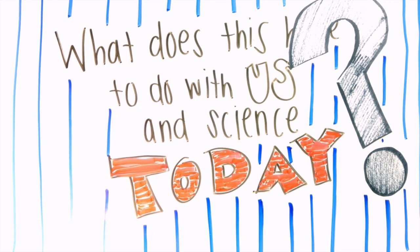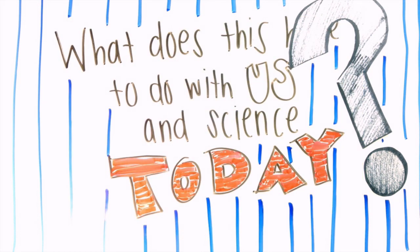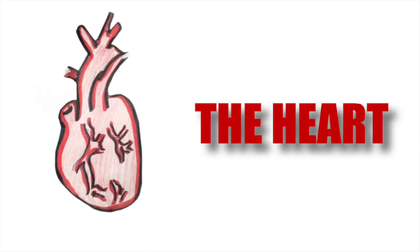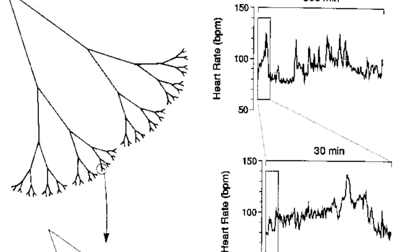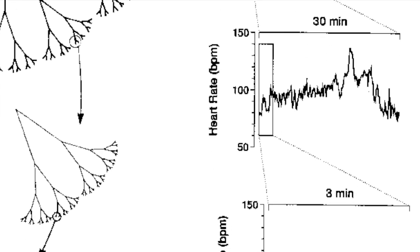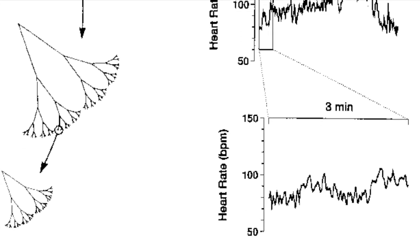Fractal geometry was first used a long time ago in Japanese art and today has become a big part of biology and technology. We now know the heart has a pattern of self-similarity — the arteries in the heart have a tree-like structure with diverging branches. When looking at a graph of a healthy heartbeat comparing time (X) and beats per minute (Y), the dynamics show self-similarity: from a 300-minute scale to a 30-minute scale and then to three minutes, you see the same kind of chaotic pattern.